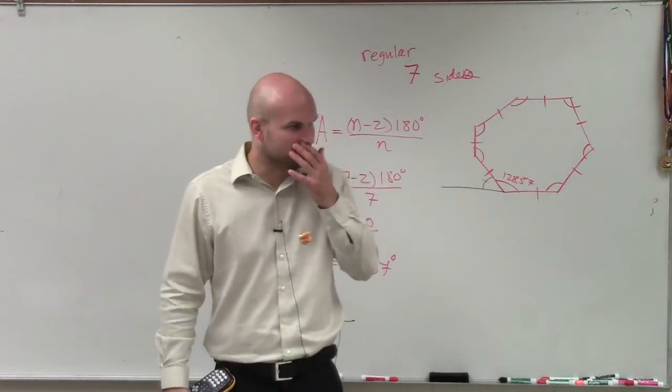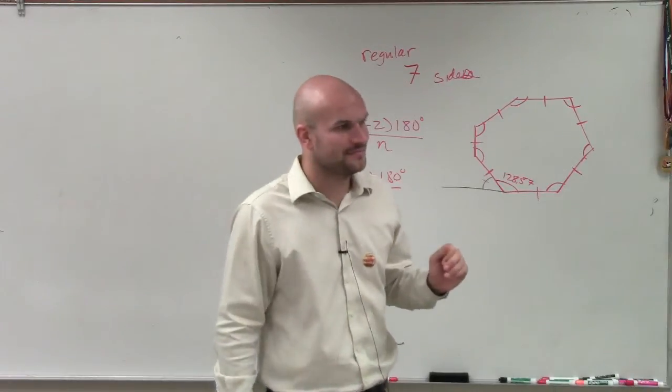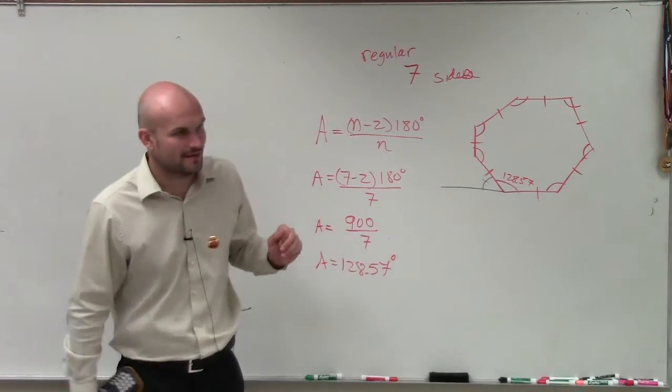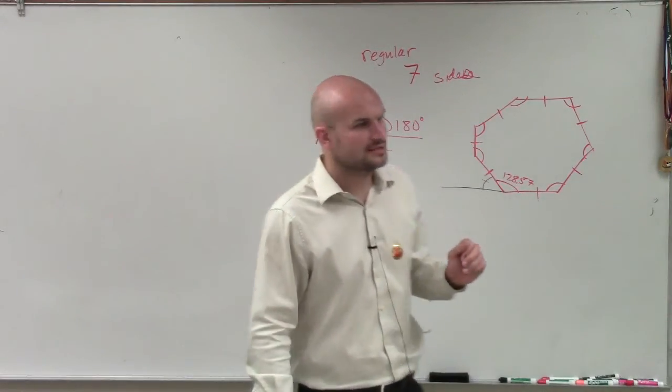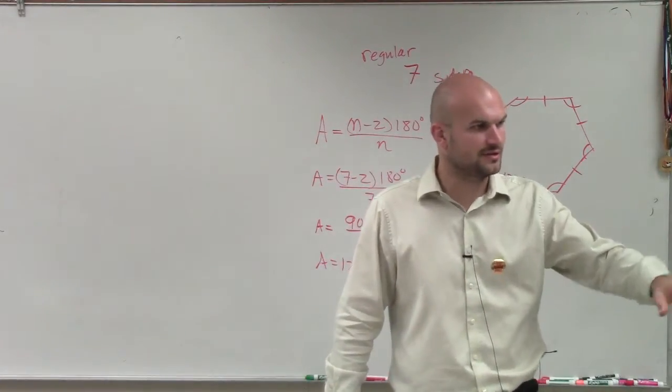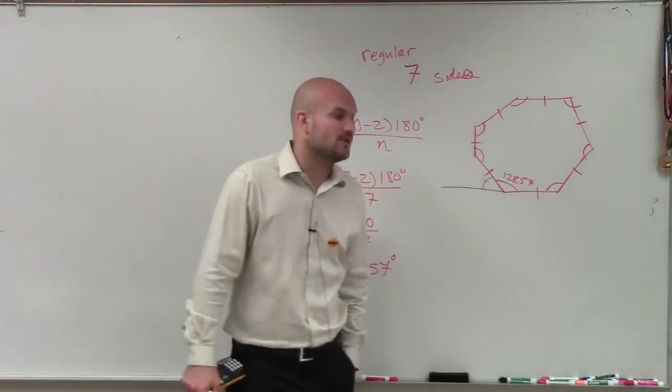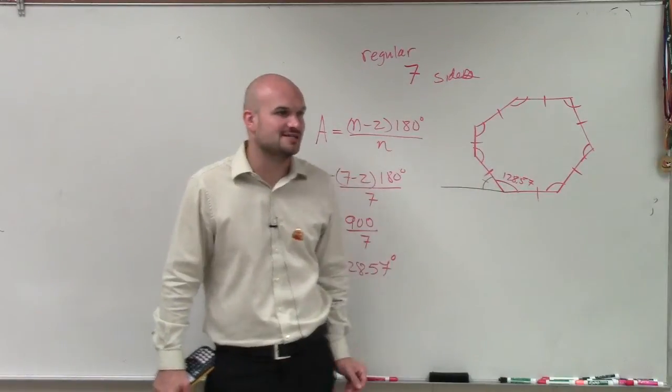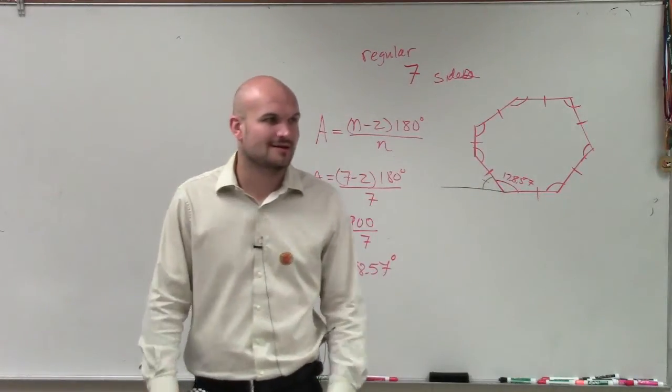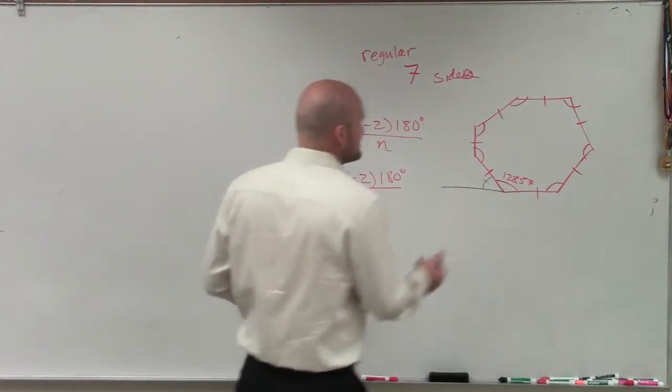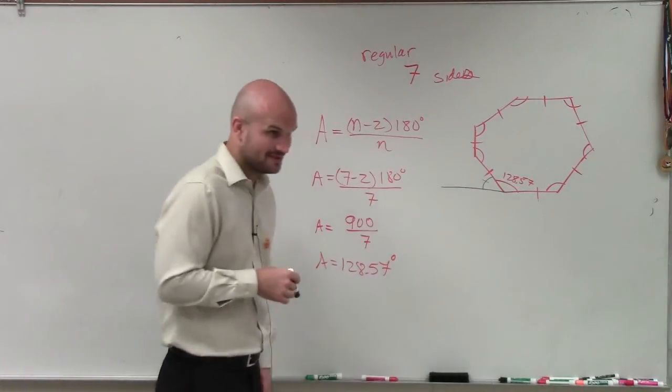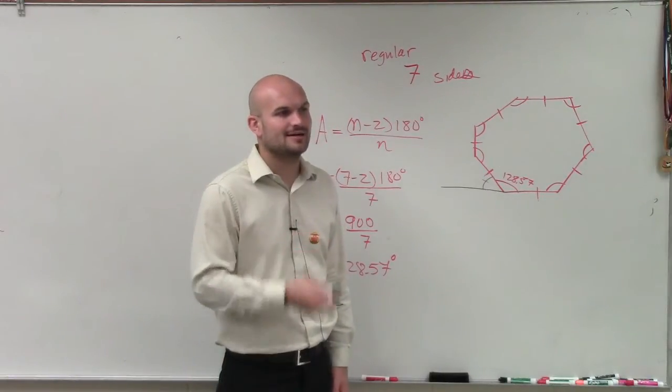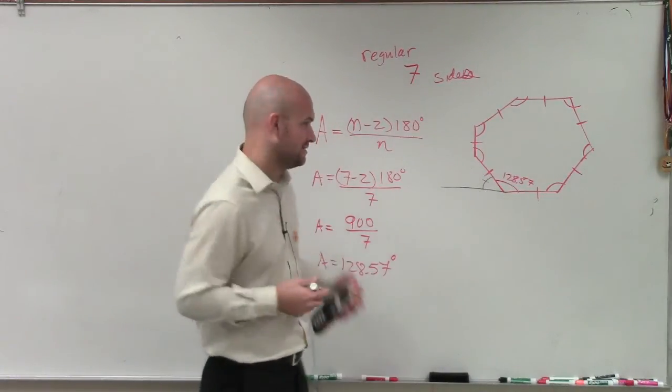They add up to 180. So what do we call two angles that add up to 180? They are supplementary. And what type of supplementary angles make up a line and have an adjacent side and vertex? We call them a linear pair.